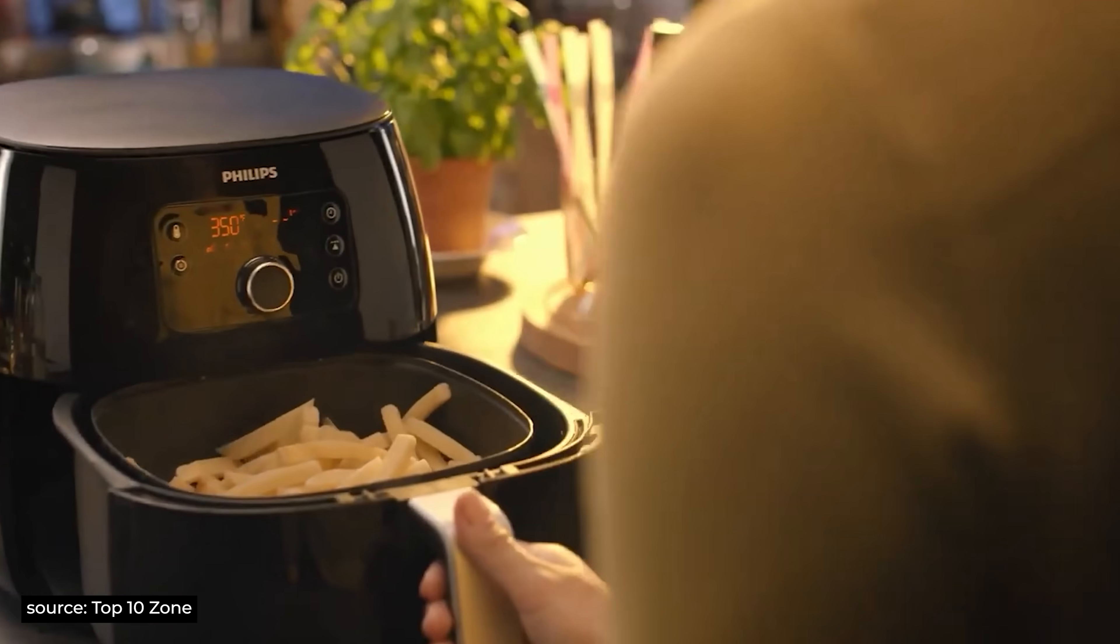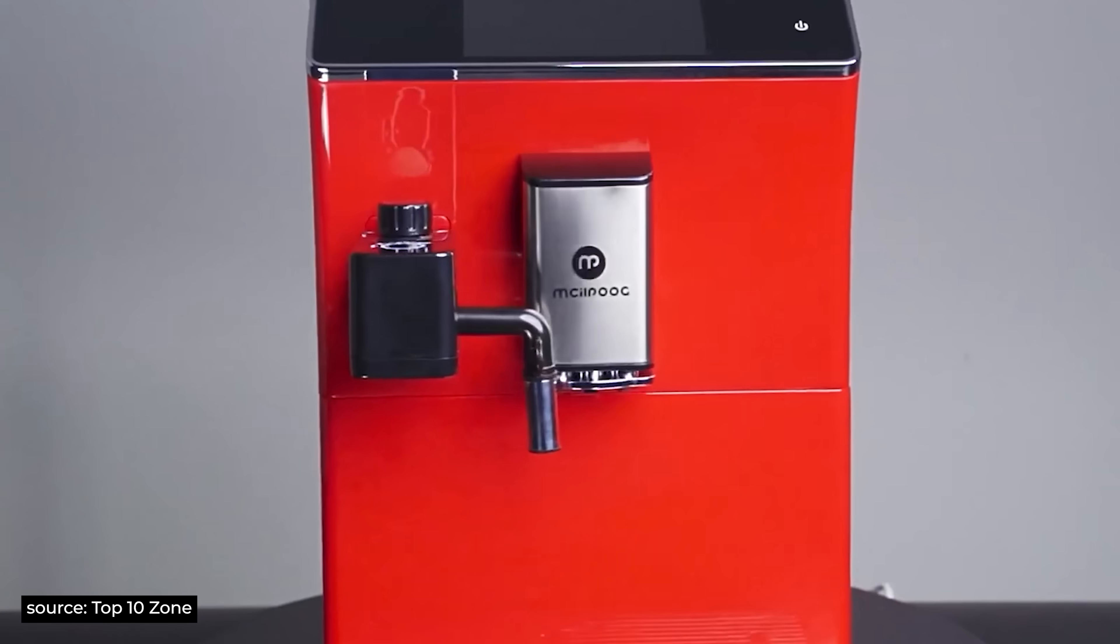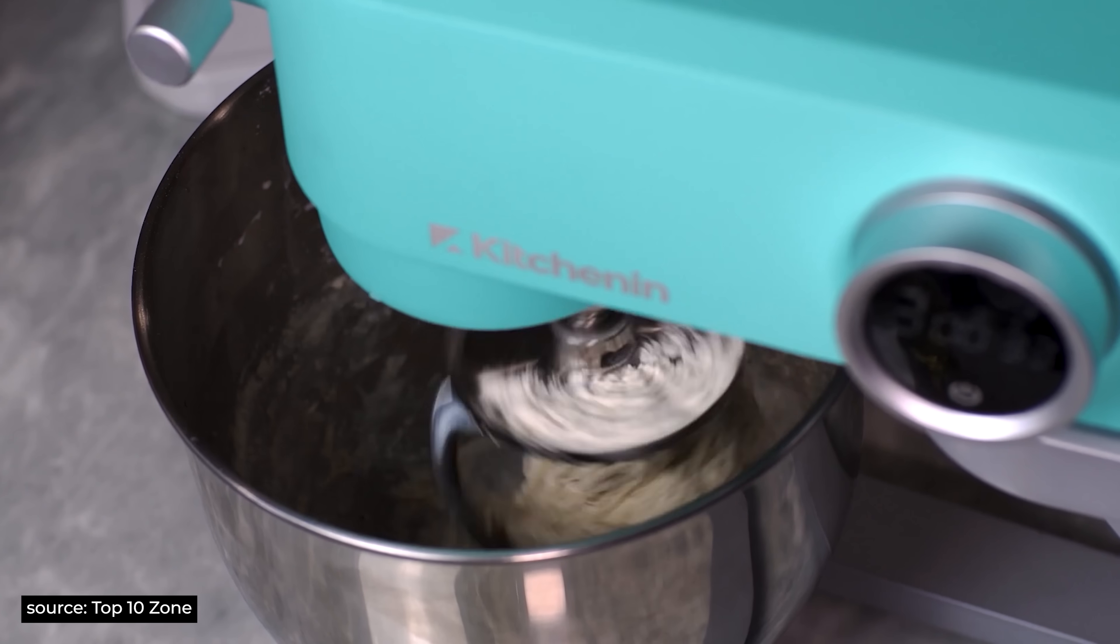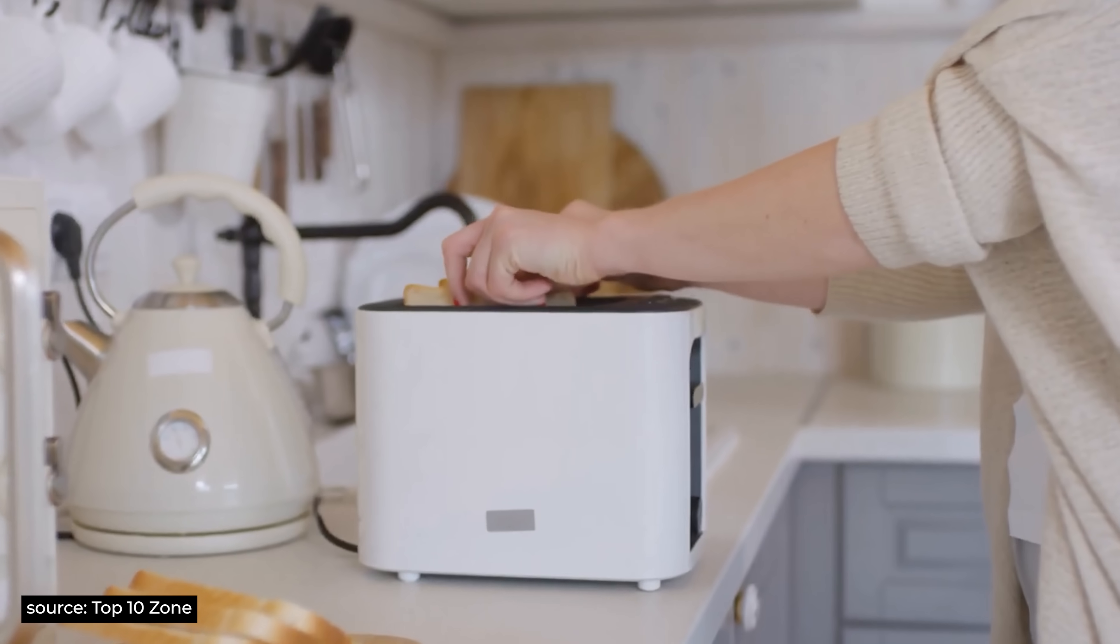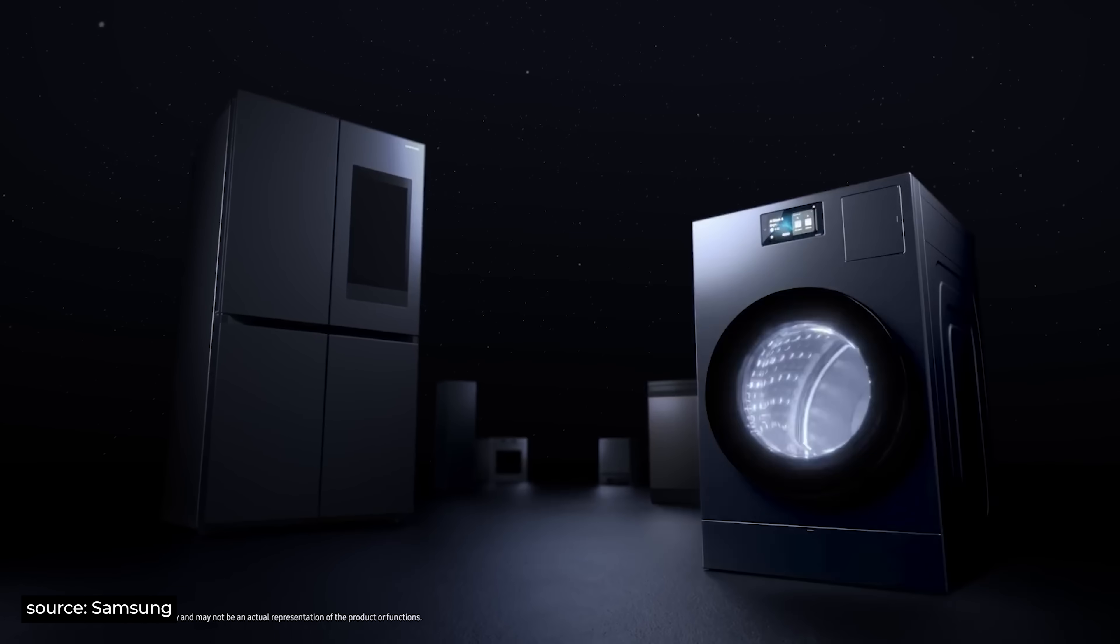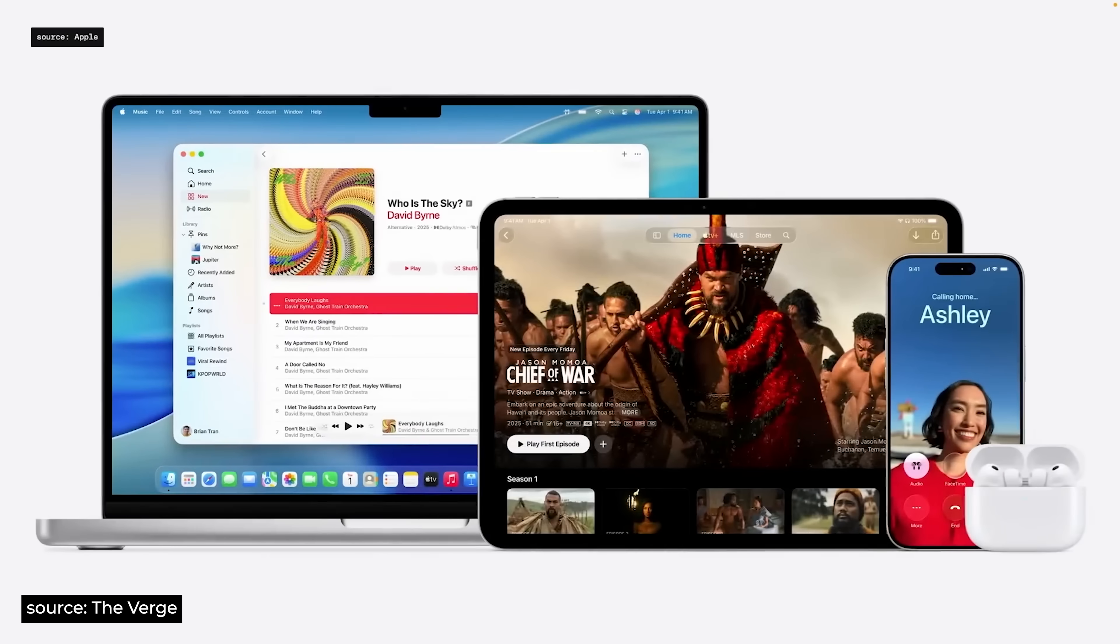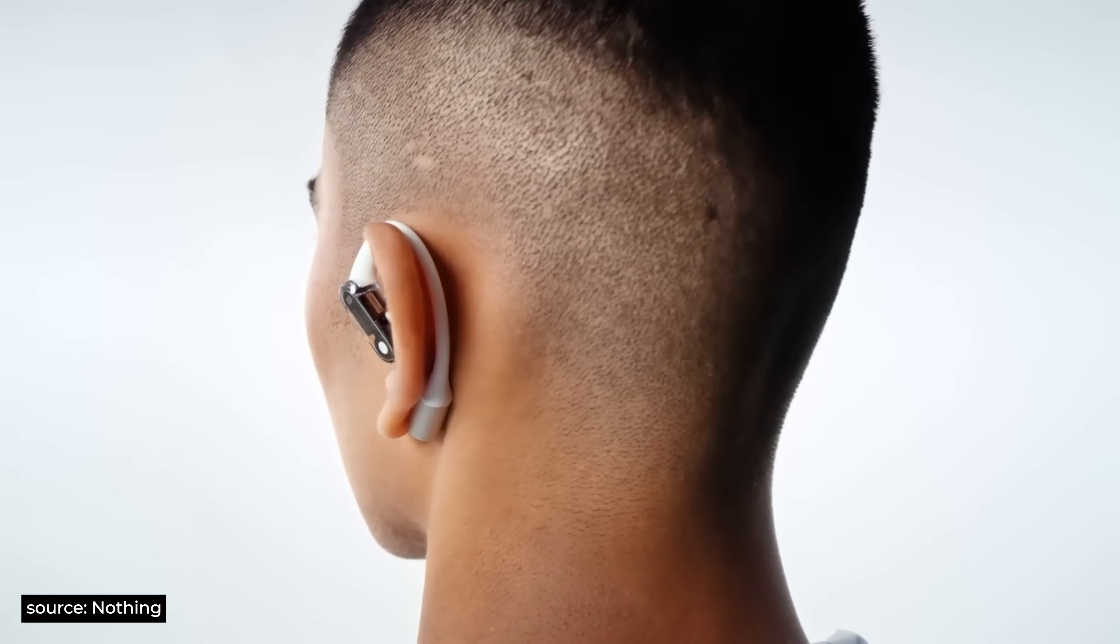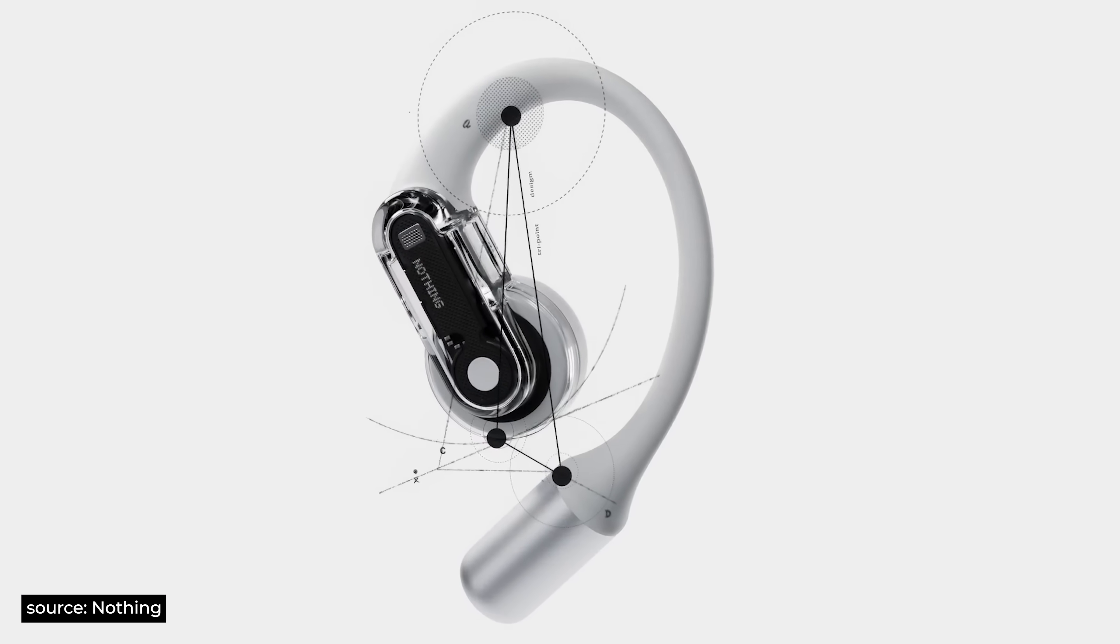Planned obsolescence is when products are designed deliberately to become physically unusable after a certain period of time. This could be caused by reducing the longevity of hardware whilst blocking repair or even more frustratingly by cutting off product software updates. Perceived obsolescence on the other hand comes from rapidly bringing out new products with new features. Whilst these are often superficial or only minor upgrades, they make the user feel like their old device is no longer good enough, incentivizing them to replace it with the newest model.